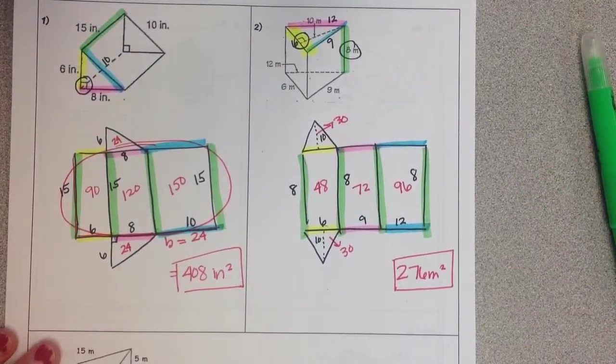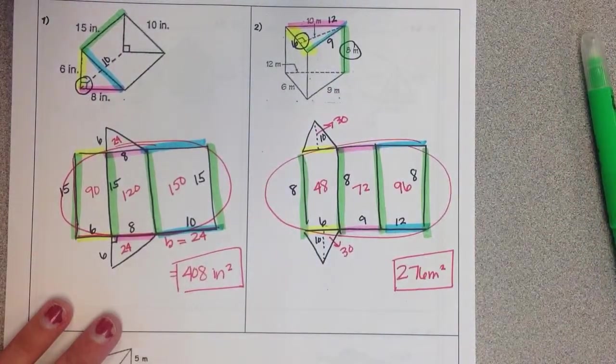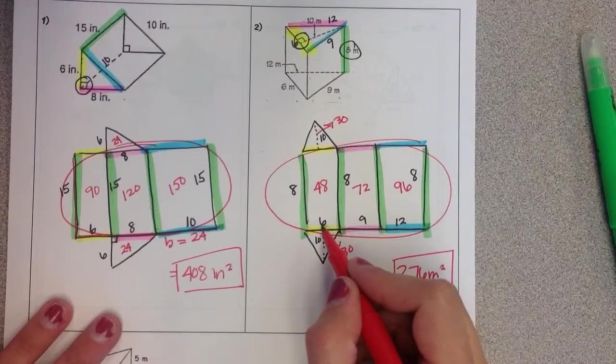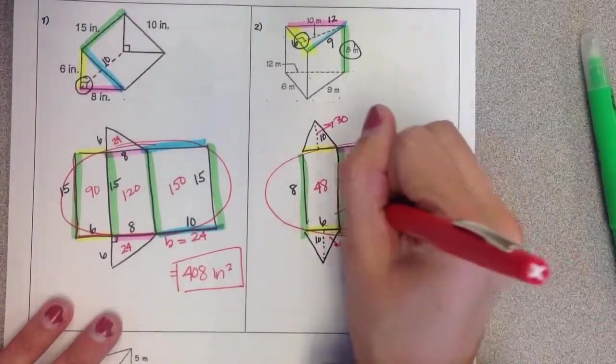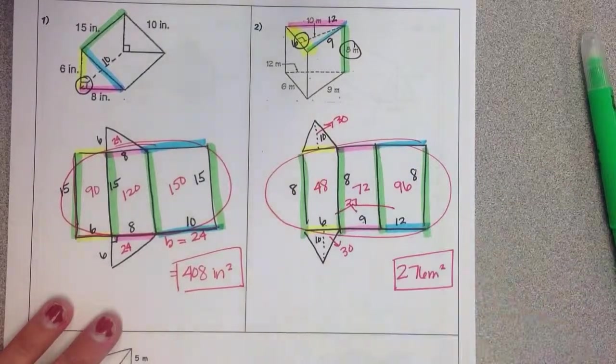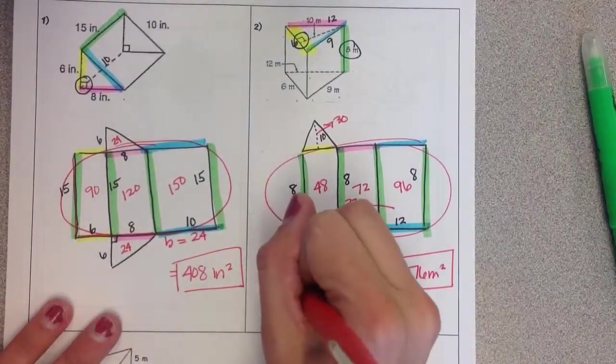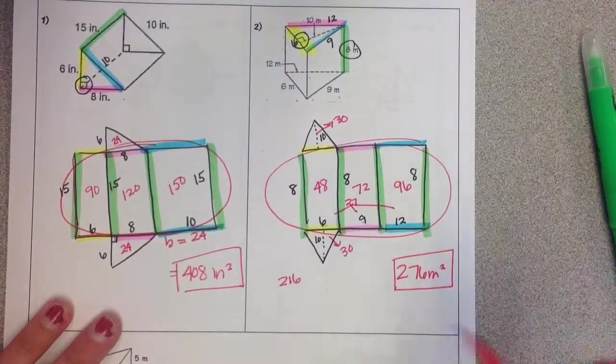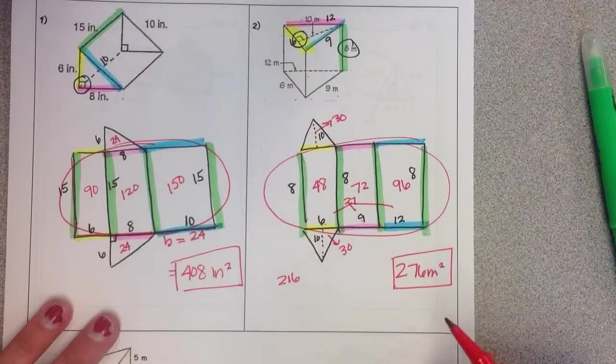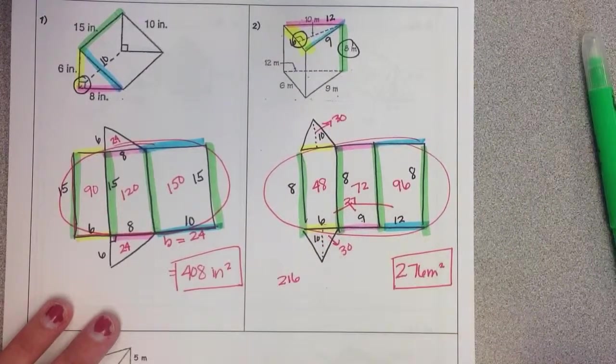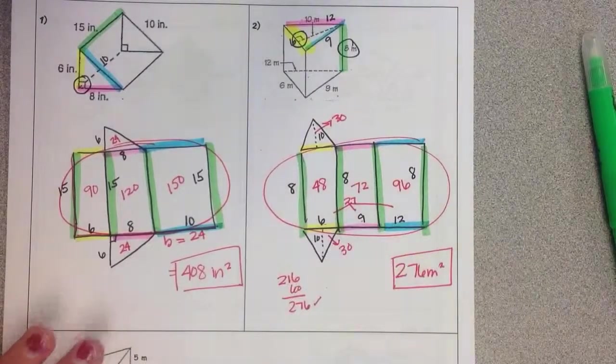So again, you could look at this and say, I'm going to look at this whole entire rectangle that has a base of 6 plus 9 is 15 plus 12 is 27, times our height of 8. If we did 27 times 8, we'd get 216. And then you could look at your triangles. You're doing base times height divided by 2, and then you're multiplying by 2 because there's 2 of them. So you could just do 6 times 10, which is 60, which would give you the same area as 276.